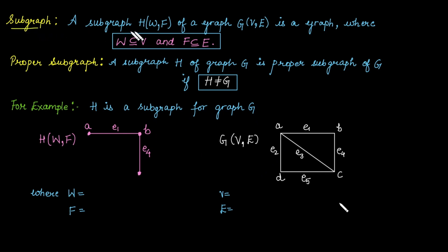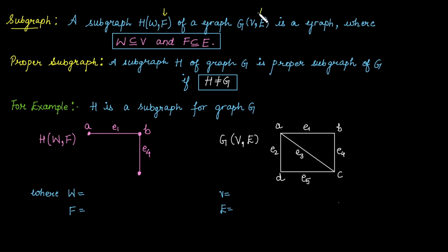Subgraph. A subgraph H of the graph G is a graph where the vertex set W of the subgraph is a subset of the vertex set of graph G, and the edge set of the subgraph is a subset of the edge set of graph G.